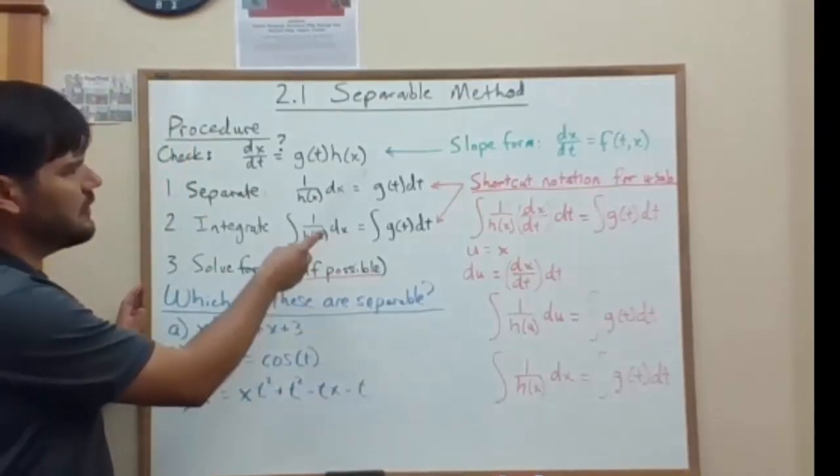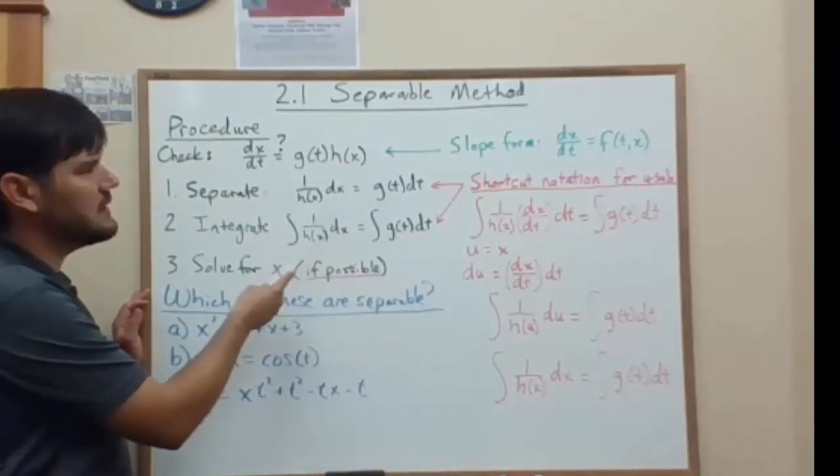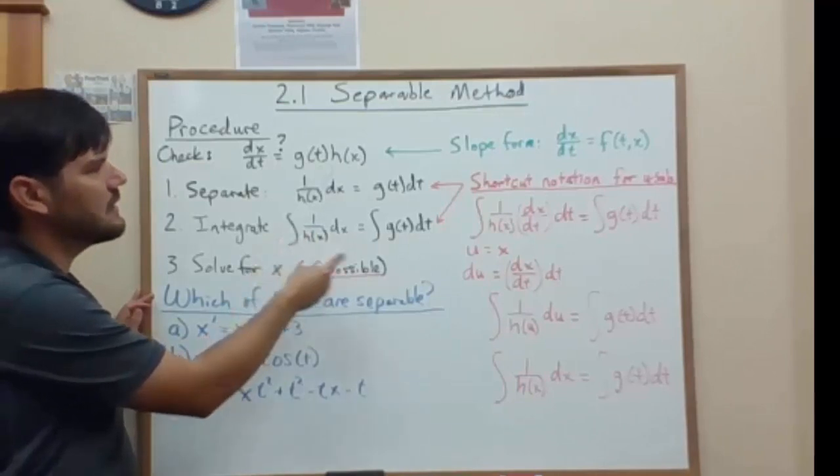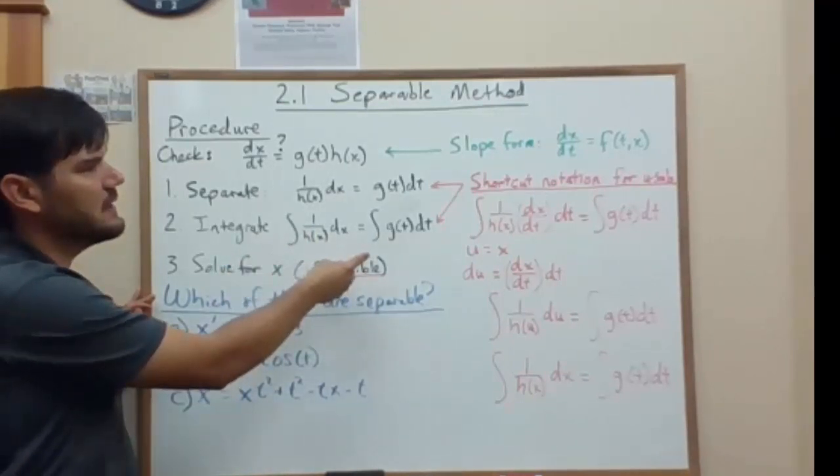How? Well, you just bring the x's on one side, here we divide by that h of x function, and then bring the t's on the other, here we multiply by dt.